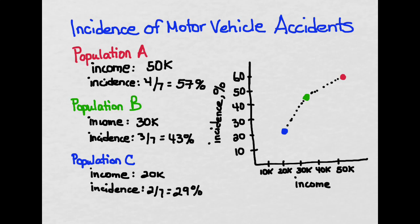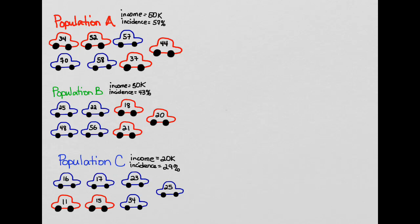So now we're going to look at the individual data that make up these populations. Here you see the individual data that make up the group data. For example, population A that we saw before had an income of $50,000, a mean income of $50,000, and an incidence of 57%. So 57% of the group had gotten into a car accident.